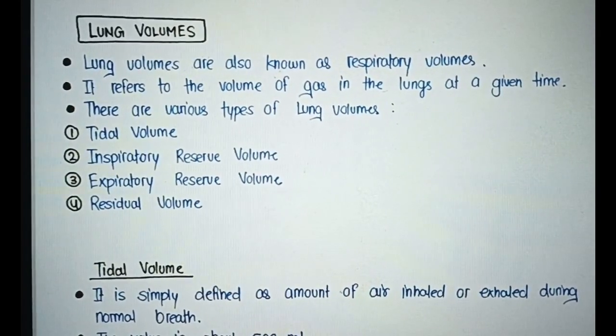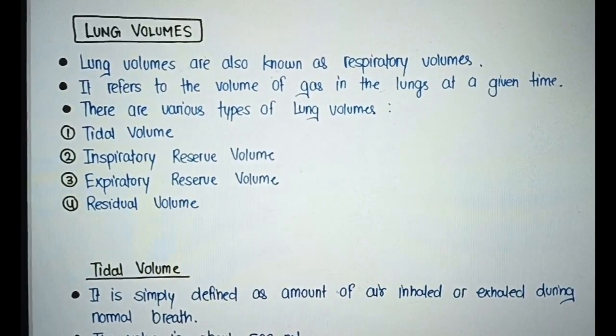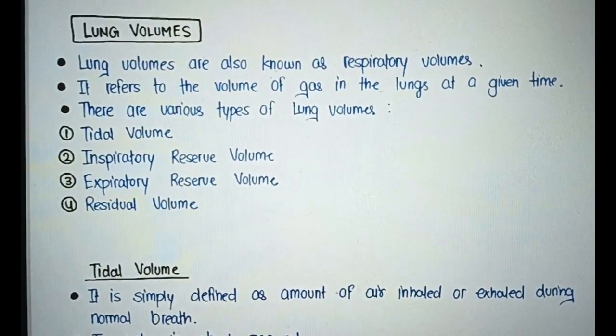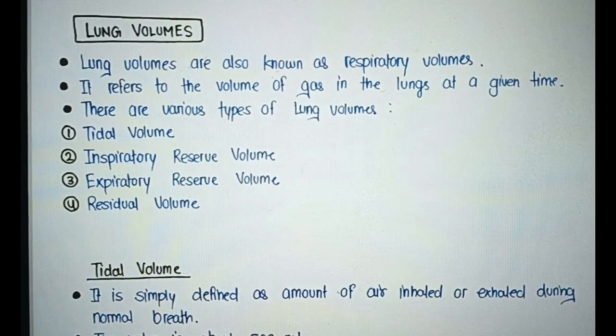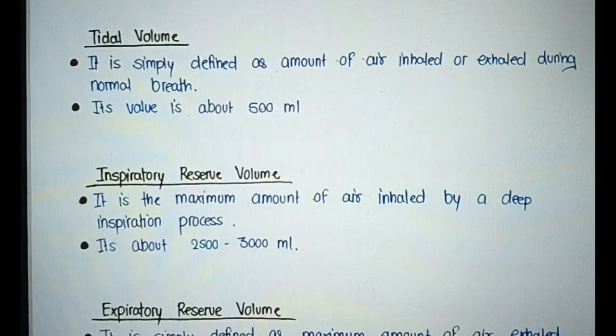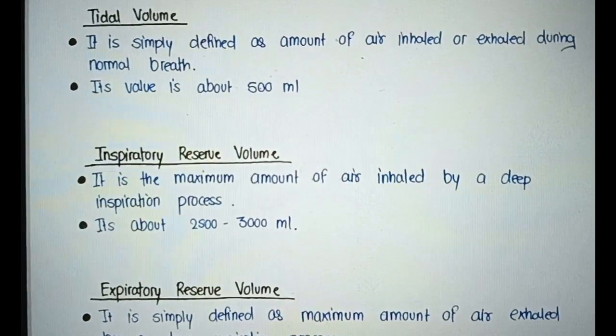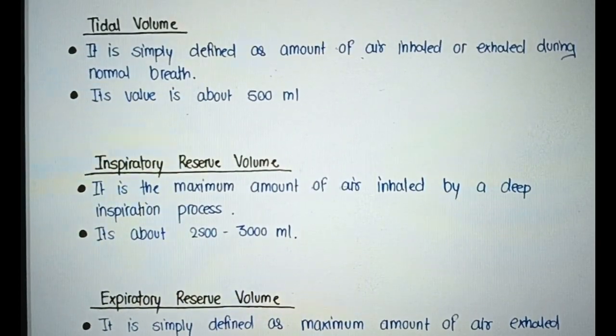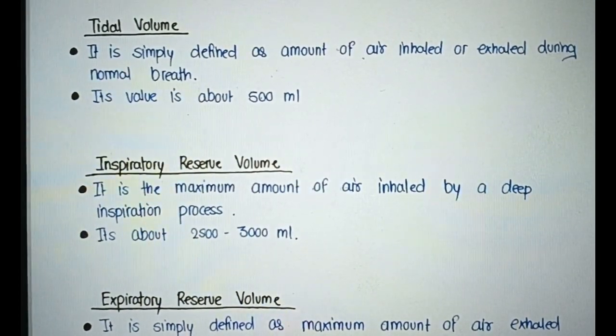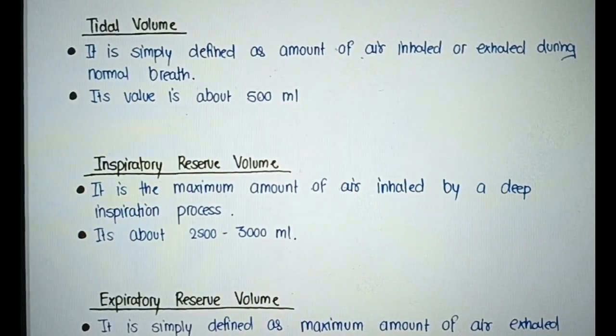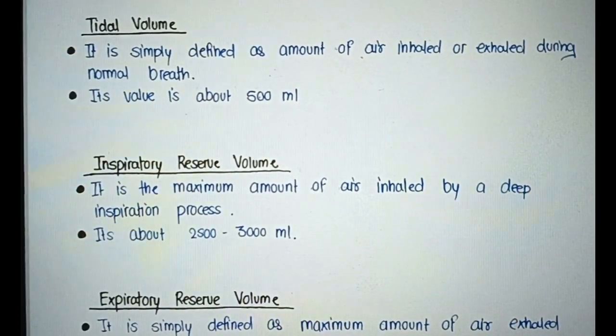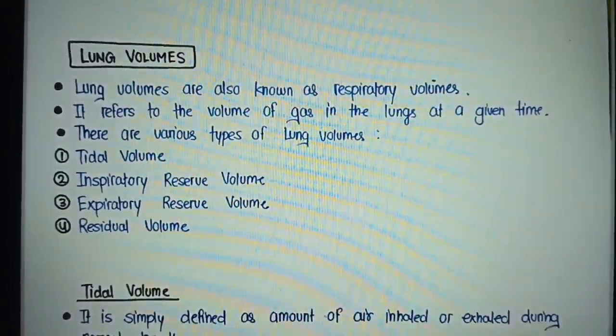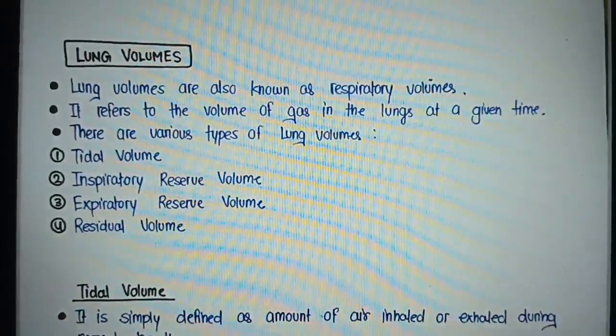Inspiratory reserve volume is the maximum amount of air inhaled by a deep inspiration process. It's about 2500 to 3000 milliliters. Expiratory reserve volume is the maximum amount of air exhaled by a deep expiration process, about 1200 milliliters. Residual volume is the amount of air that remains inside the lungs after forceful exhalation, about 1200 to 1500 milliliters.